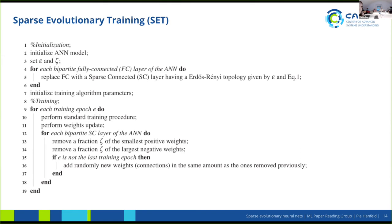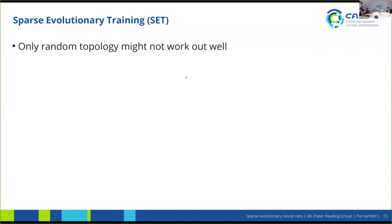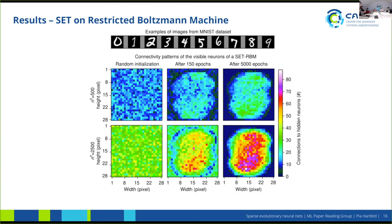One more question — in figure eight, what does 'hidden neurons' mean? Hidden neurons: in every neural net there are at least two layers of neurons. The input resembles like 28×28 pixels, which is the size of the MNIST data. 'Hidden' is the amount of neurons that are inside the neural net and not on the input or the output layer.